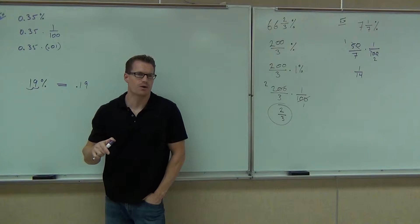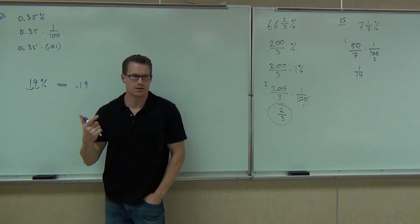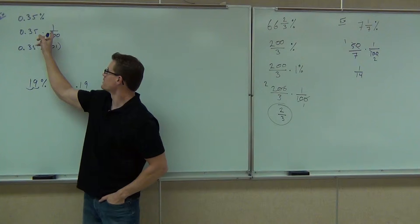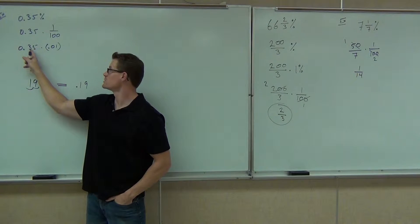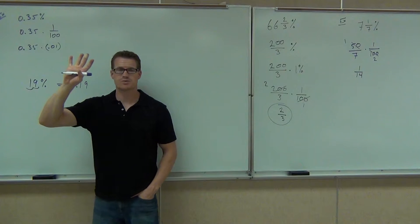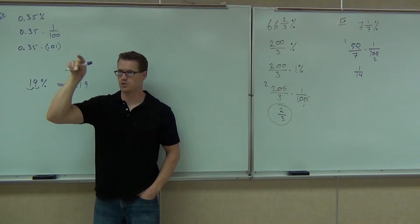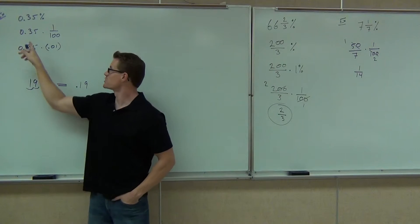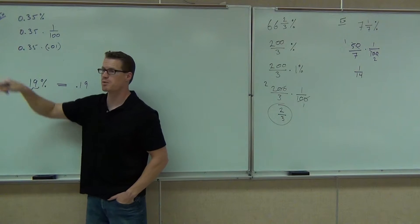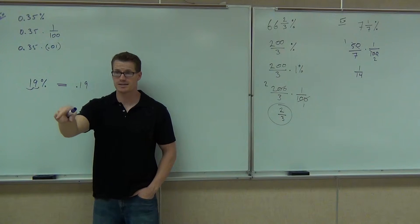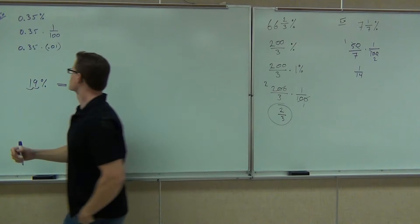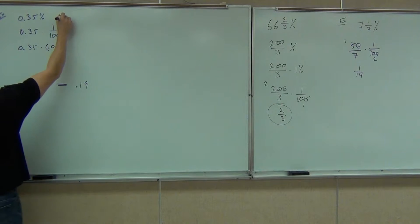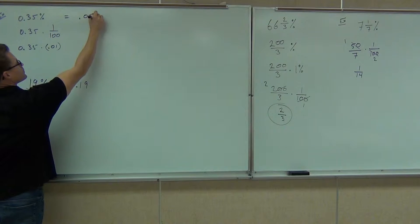Actually, you can just think about it right here. Look up at the board. You can do it in your head. What's 1 times 35? Well, it's 35. How many decimal places do you have? 1, 2, 3 — how many? How many spots should you move from the four spots? That means you're going to go actually past what you were. It should be 0.0035. Is that what's on your calculator? 0.0035.